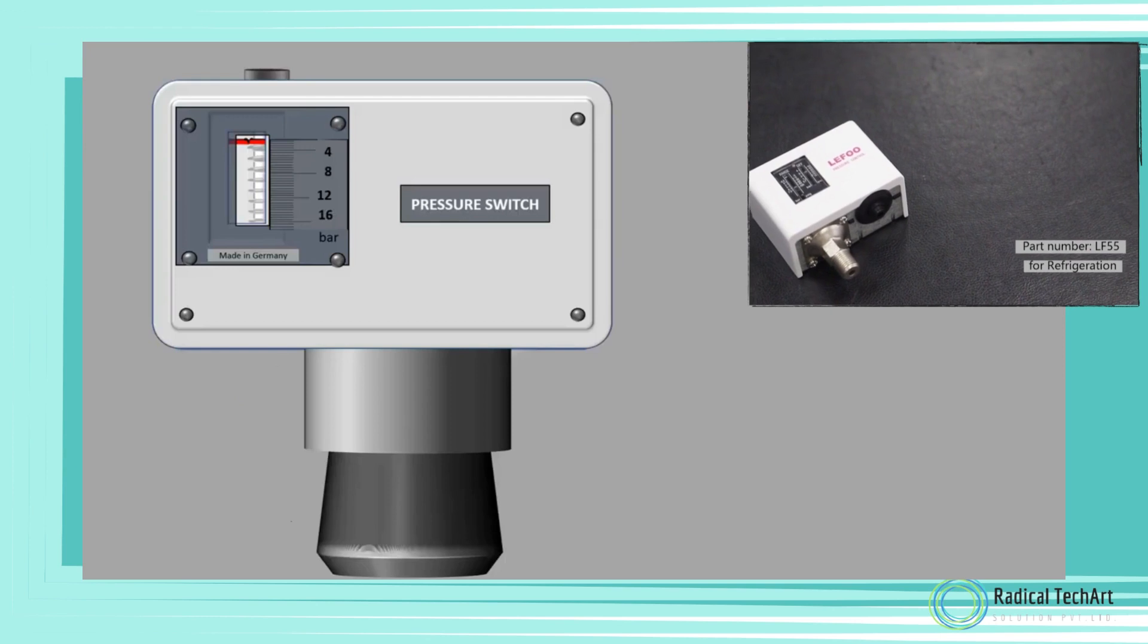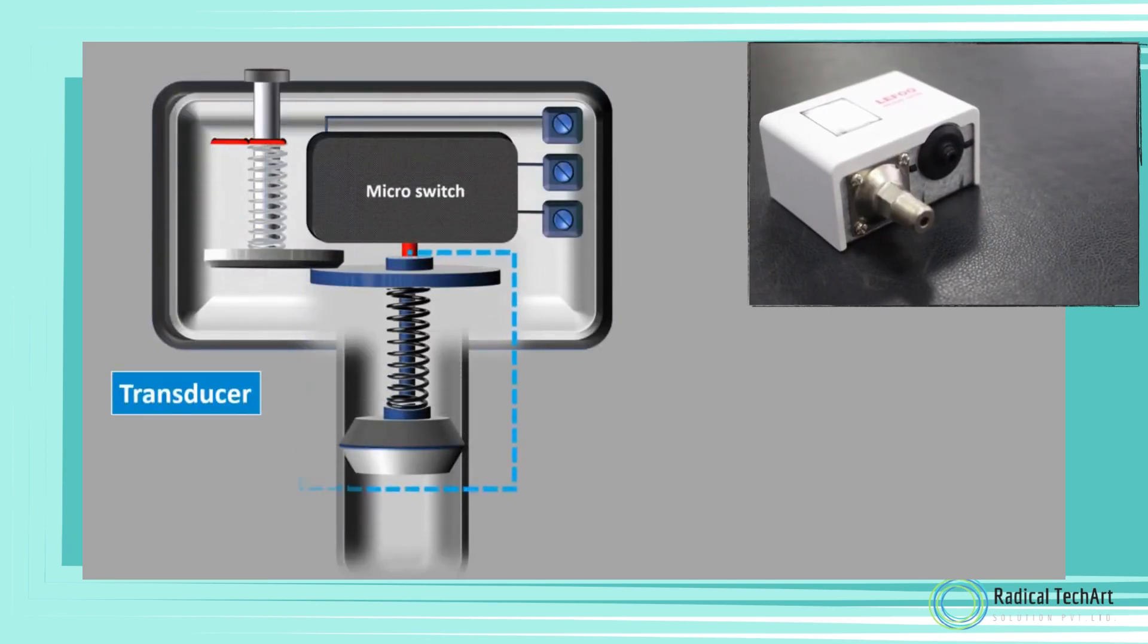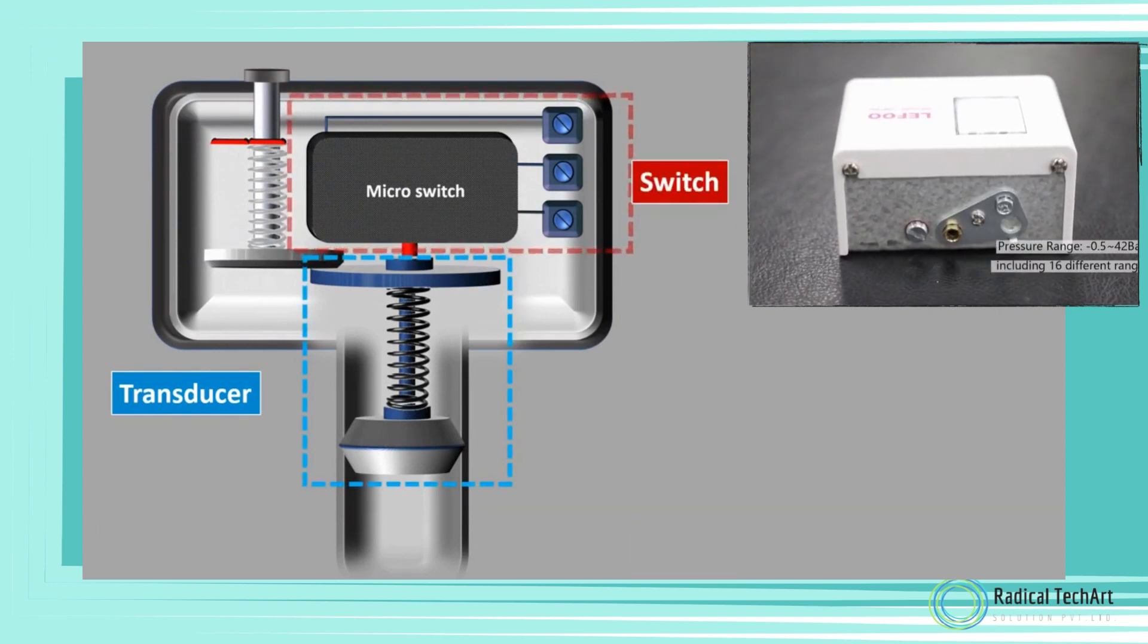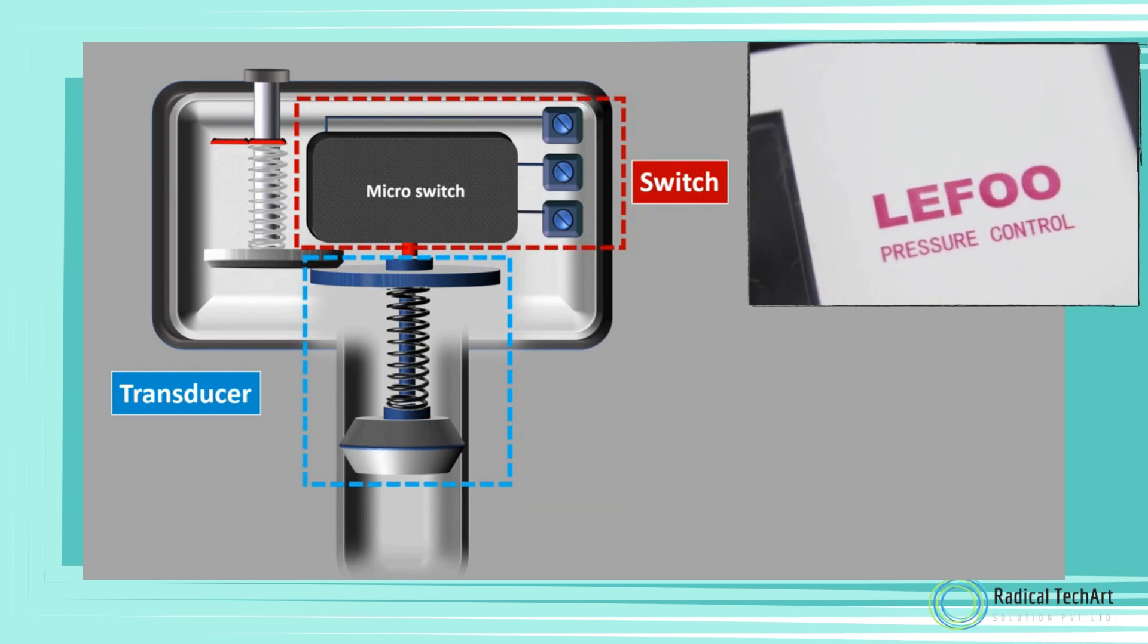A pressure switch mainly consists of a transducer which measures the pressure and an electrical switch. The transducer is the part that comes in contact with the process pressure.